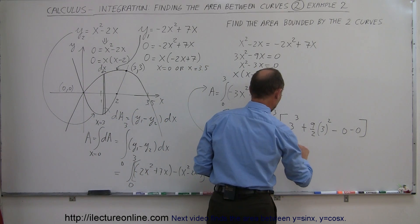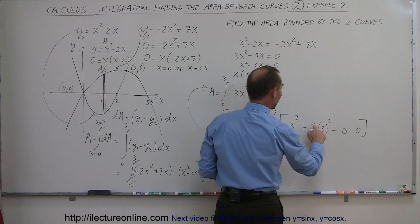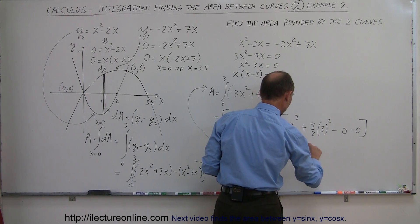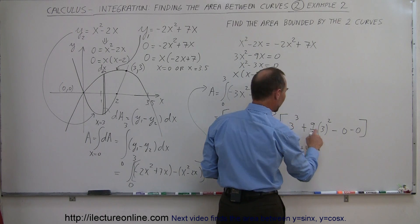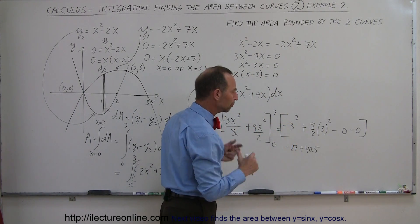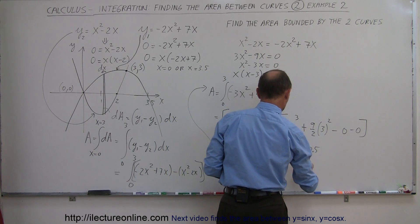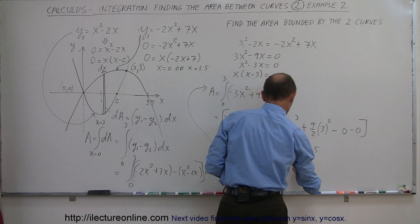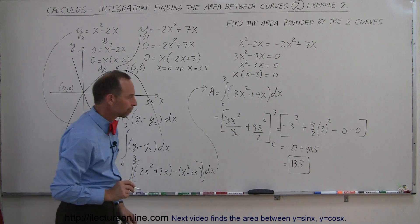So this becomes minus 27 plus 9 times 9, which is 81 divided by 2, which equals 40.5. The difference between those two gives 13.5, and that is the area between the two curves.